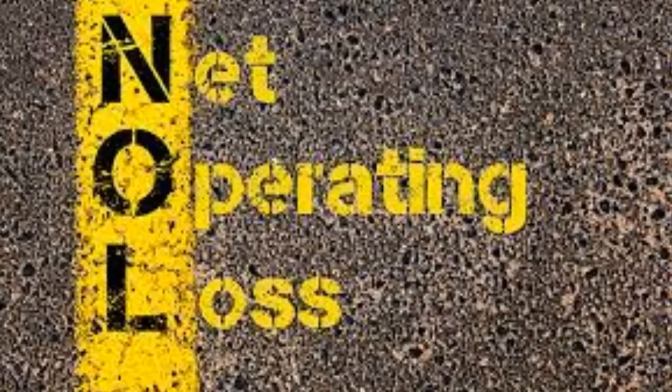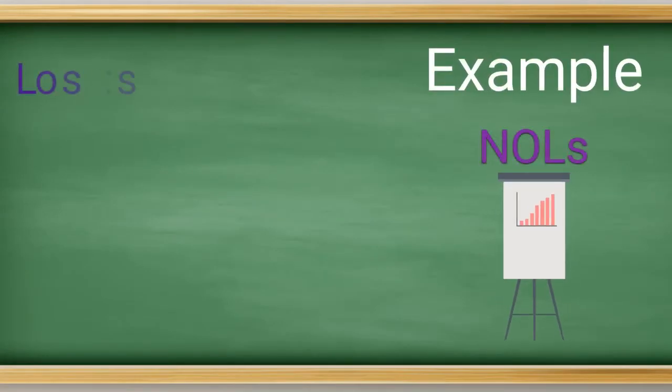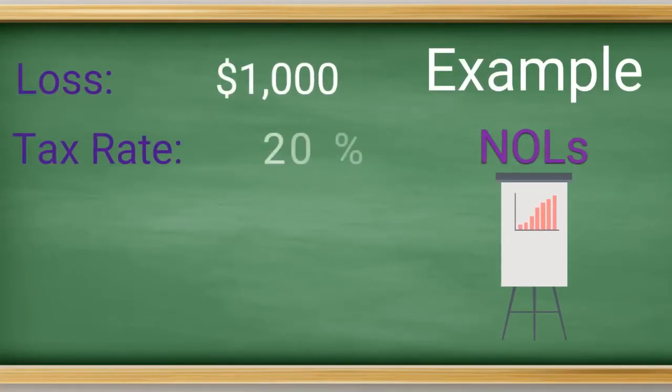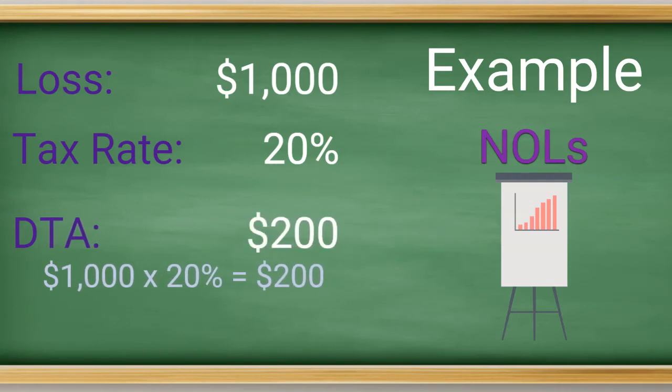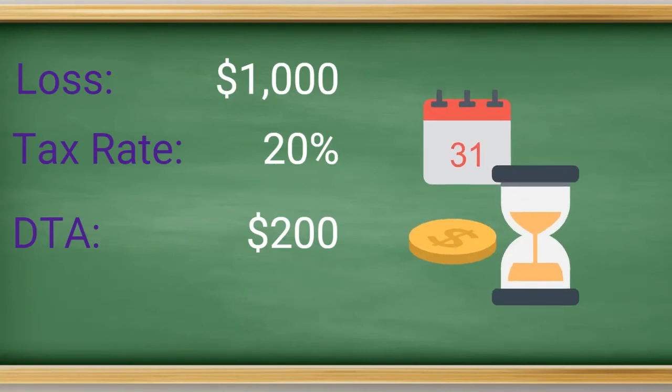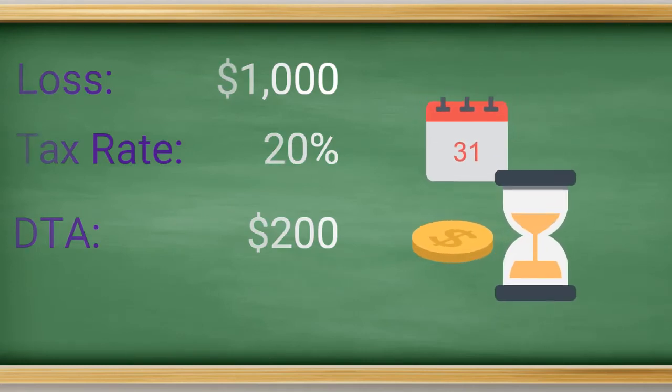However, the most common DTA is caused by net operating losses, or NOLs. NOLs are credits on future earnings for current or accumulated losses. So, for example, if you had a loss of $1,000 and a 20% tax rate, you would have an NOL of $1,000 and a DTA as a result for $200. It is an asset because in the future, you can utilize it to offset earnings.